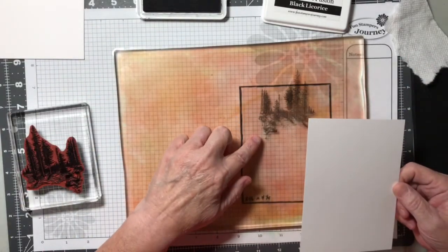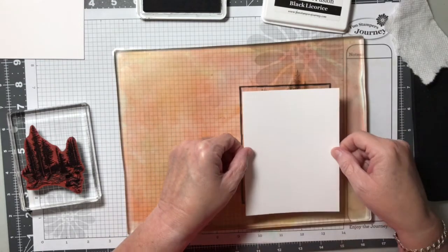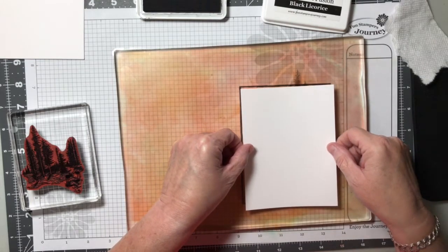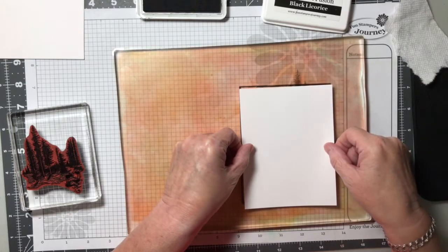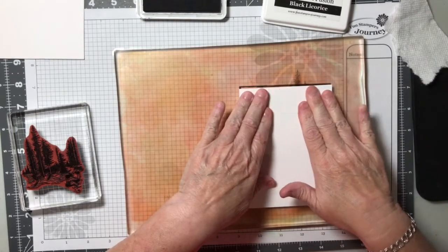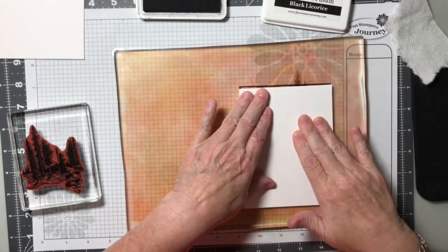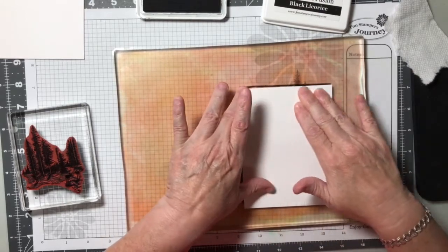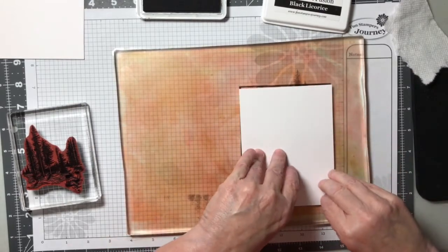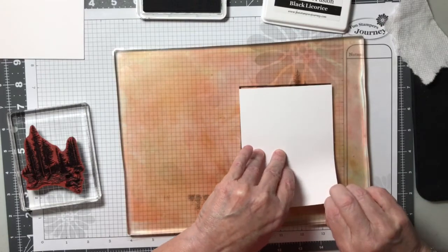Okay. So this is going to become the bottom of the card. I'm going to go ahead. I'm going to put this on. And then I'm going to apply firm pressure all over this so that I get the full image. Then I'm going to lift it up.